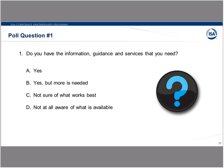That brings us to poll question number one, at the end of the first section. The poll question is: looking at your situation today, do you feel that you have the information, the guidance, and services that you need? Your choices are: yes; yes, but more is needed; not sure of what works best; and not at all aware of what's available. Please enter your responses to the poll and we'll get a gauge of the position of the audience.